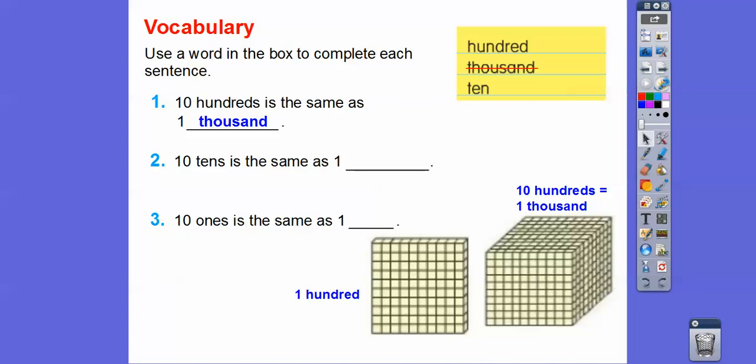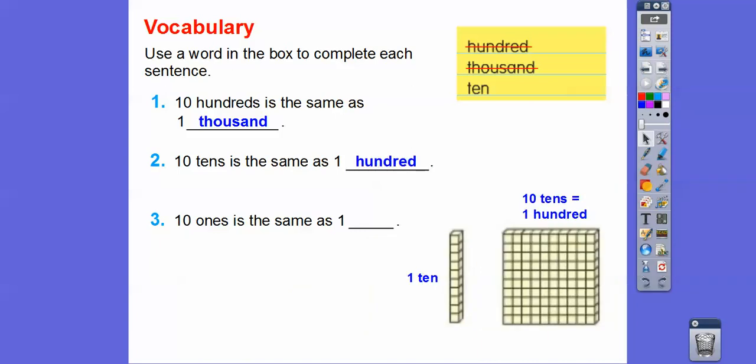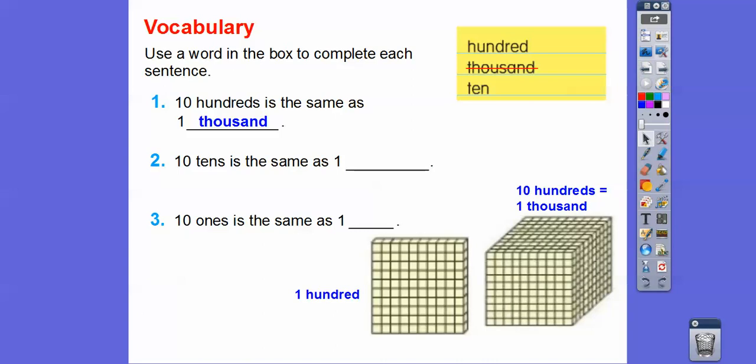Ten tens is the same as... Well, ten tens is this right here. Here's one tens, so here's ten tens. It's the same as one hundred block or one hundred flat. This is typically called a tens stick or a strip, and this is called a hundreds flat. And then this big guy here is called a cube, a thousands cube right there.